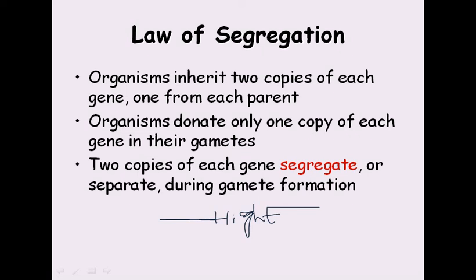Organisms donate only one copy of each gene through their gametes. During gamete formation, only one of the two alleles is segregated — it is not blended, just segregated. Our father has two copies and our mother has two copies; mother gives one and father gives one. The two copies of each gene segregate or separate during gamete formation and generally do not blend. This is a very important concept according to Gregor Johann Mendel.